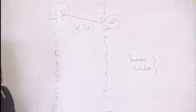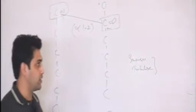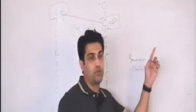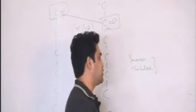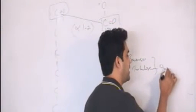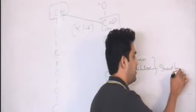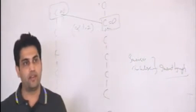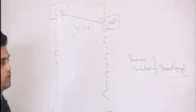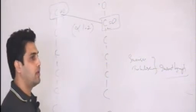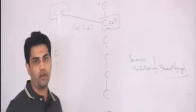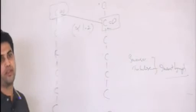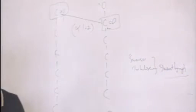So sucrose and trehalose are the two disaccharides which are non-reducing. Maltose and lactose are reducing sugars. Sucrose is the best answer, because trehalose is present in insect lymph — it is there in nature but not in humans. So we go for sucrose. But if it is a PGI question, you will have to answer both sucrose and trehalose.